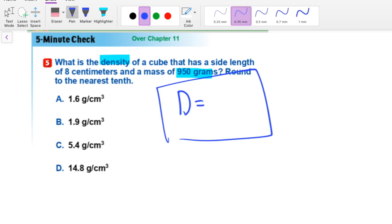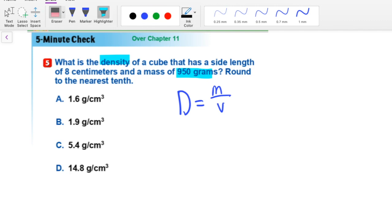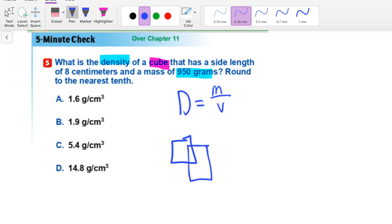Alright, so now that we know the formula, what exactly do we need to do? We're told that we need to find the density of a cube. And that is a huge giveaway. Why? Because a cube has all side lengths equal to one another. So here I'm going to try to draw a cube. And it's not going to be a very nice cube as you can already see, but it's just kind of to give us a rough idea of what we're working with.